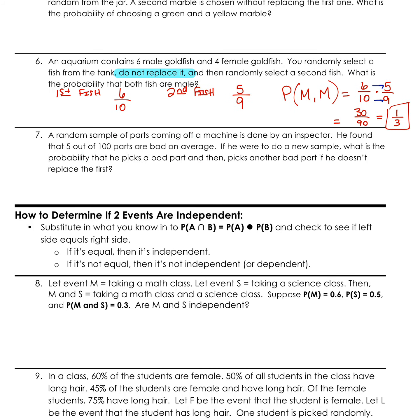Let's check out our next one. A random sample of parts coming off a machine is done by an inspector. He found out that five out of 100 parts are bad on average. If he were to do a new sample, what is the probability that he picks a bad part, does not put it back, and then picks another bad part? Key word again, does not replace. There is our dependent event. The outcome of the first depends on the outcome of the second.